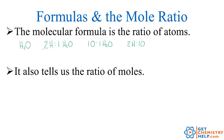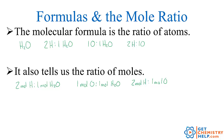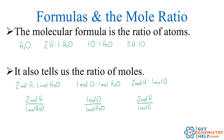This same ratio also works for moles. There are two moles of hydrogen in every one mole of water, one mole of oxygen for every one mole of water, or two moles of hydrogen for every one mole of oxygen. These can also be written as conversion factors: two moles of hydrogen per one mole of water, or one mole of water per two moles of hydrogen, or one mole of oxygen per one mole of water, or two moles of hydrogen per one mole of oxygen.